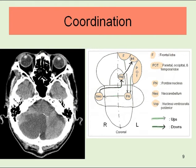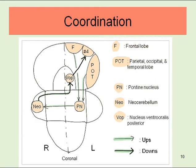This is the tract of coordination. This tract is a round trip. The going route rises at the left frontal, parietal, occipital, and temporal cortex in the telencephalon, relays at the left pontine nuclei in the brainstem, and ends at the right neocerebellum.